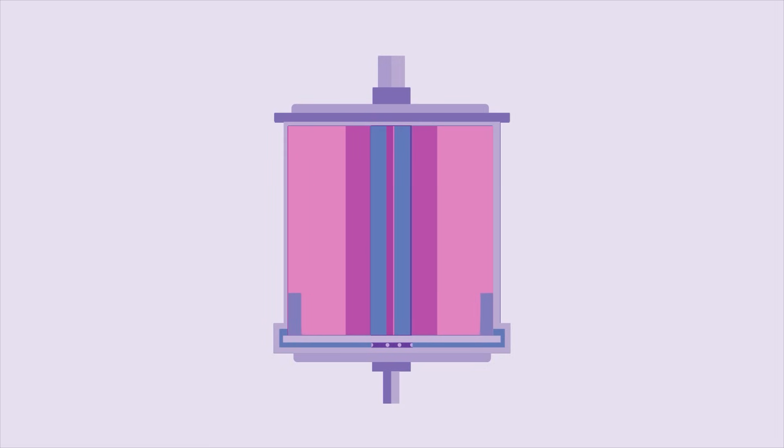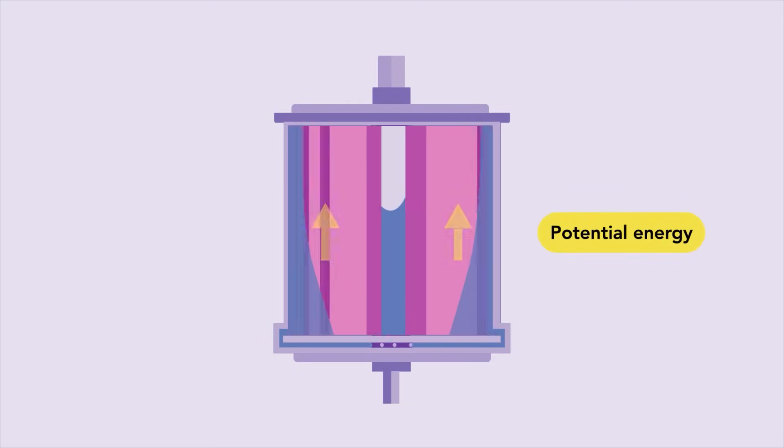When the flywheel is stationary, all its fluid is kept in the central cylinder. But as it rotates, this fluid experiences a centrifugal force, driving it into the outer cylinder. In the process, the gas in the outer cylinder is compressed, causing it to gain potential energy, much like a spring.